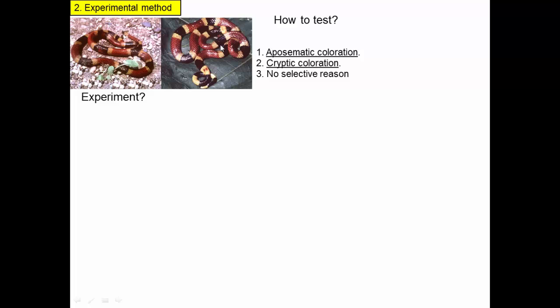How do we test the coral snake color pattern? Is it aposematic — a warning about being poisonous or venomous? Or is it cryptic, actually blending into the background? Or is there no selective reason? What sort of experiment can we do to test this, and ideally one that will separate these two factors from each other? One of the useful aspects of scientific education is learning how to think about what sorts of experiments to do when faced with certain questions. Designing experiments to test hypotheses is an advanced scientific skill, and thinking about how to do experiments is something you really want to spend time on.